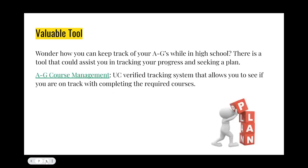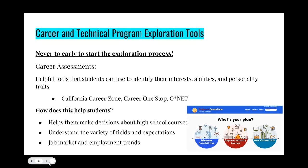A valuable tool for A through G's is the A through G Course Management system, verified through the UC system. It manages the courses you take in high school to see if you're qualified to potentially attend a UC or CSU. If you're not great at creating your own plans, you can use this to help guide you on the path to a UC or CSU.